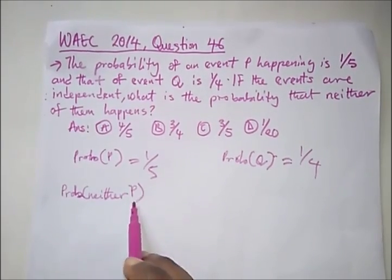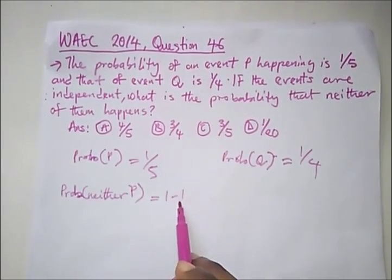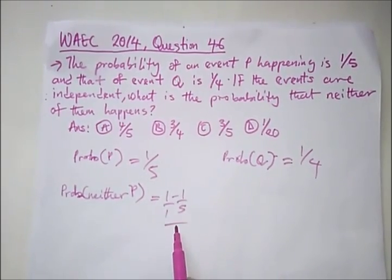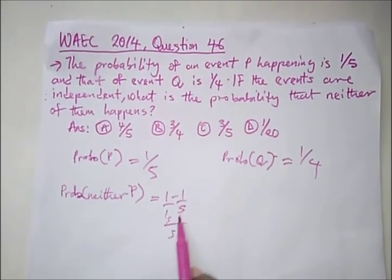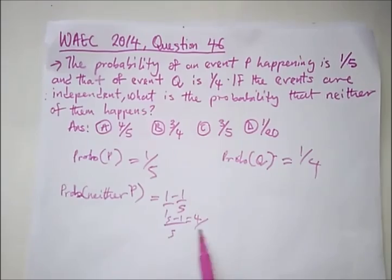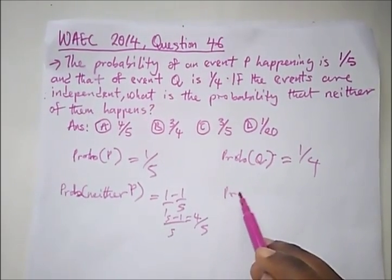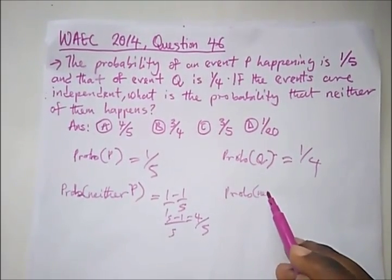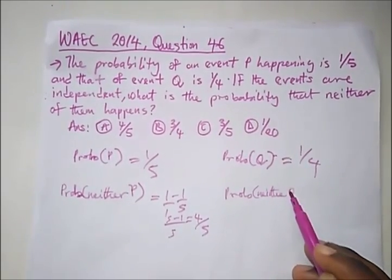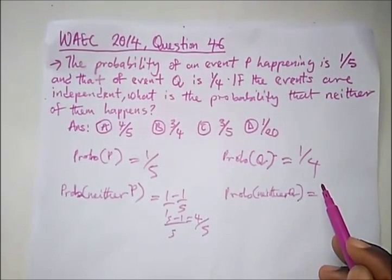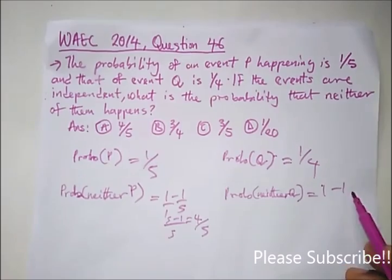Neither P is 1 minus 1 over 5, which will give us 4 over 5. And neither Q is 3 over 4.